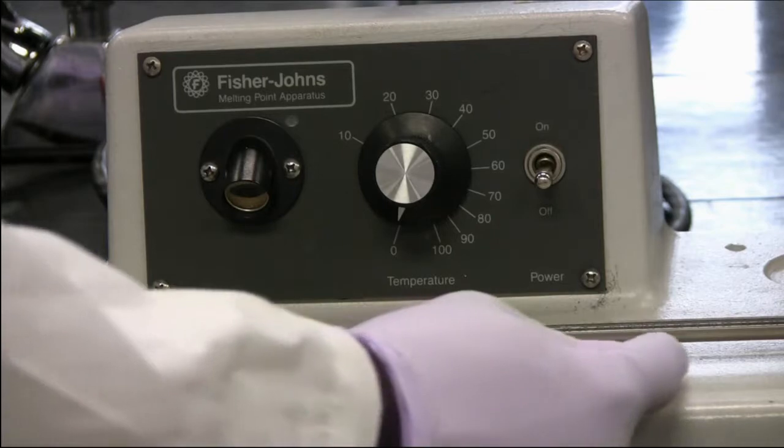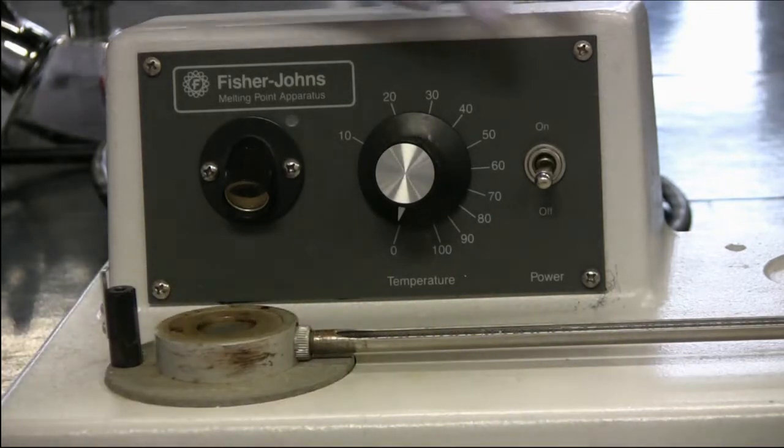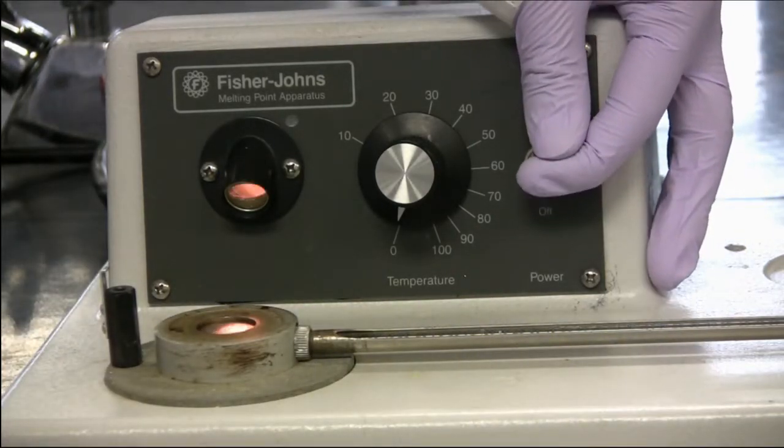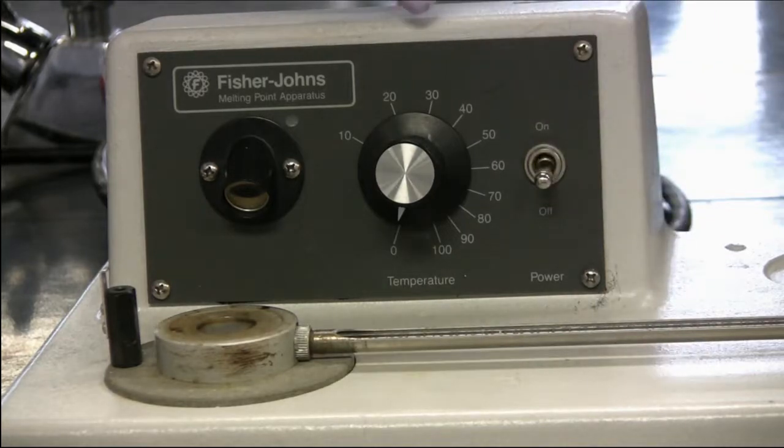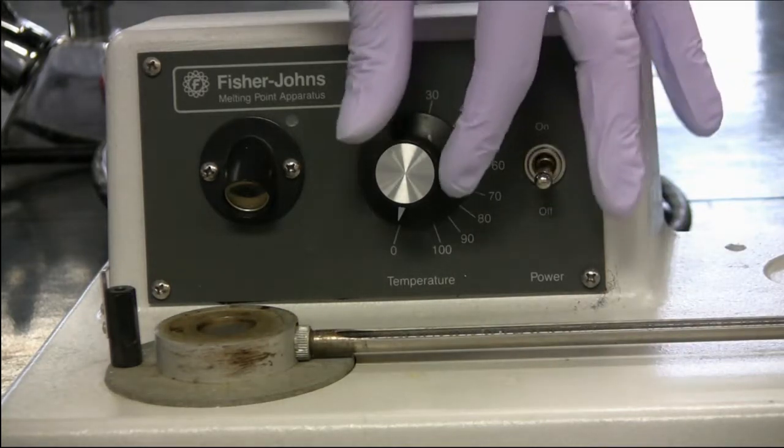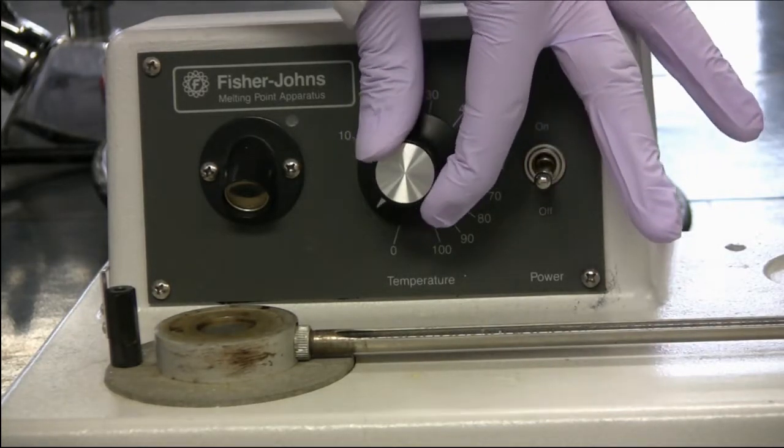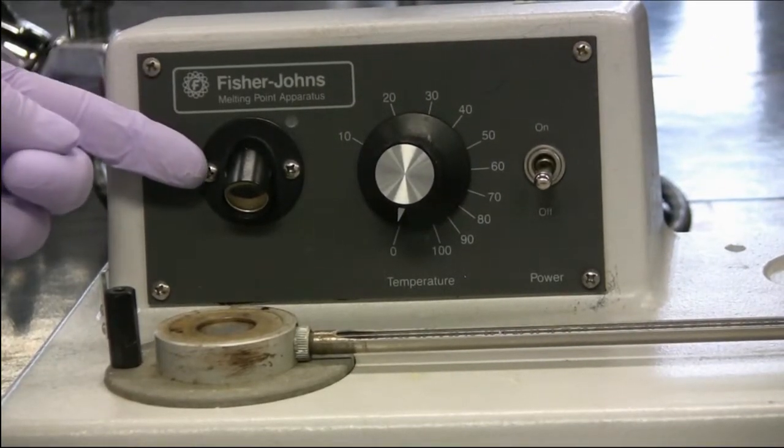This apparatus contains a thermometer, an on and off switch for the light and the heating element, an intensity knob for the temperature, and the light source itself.